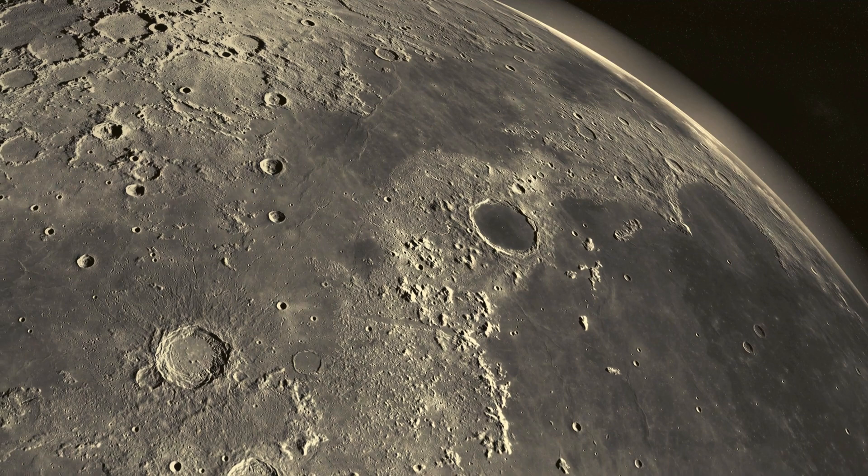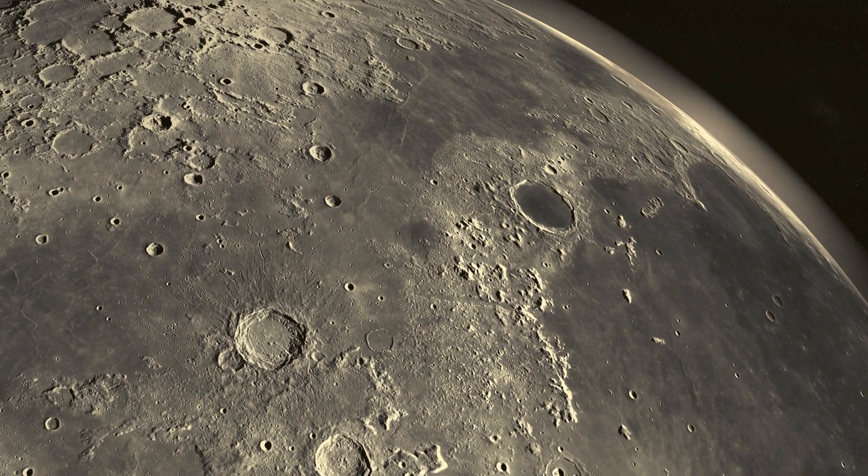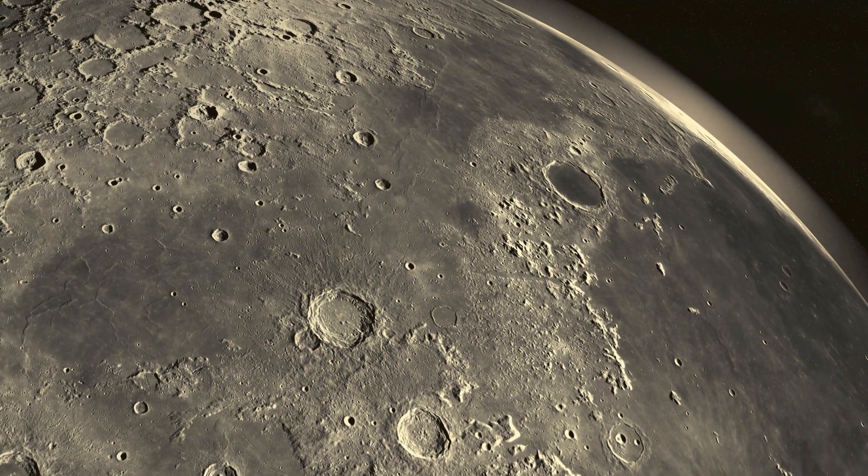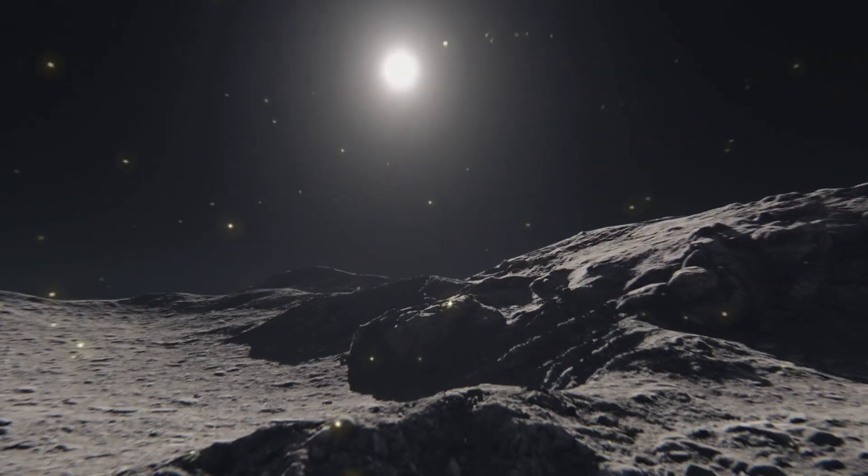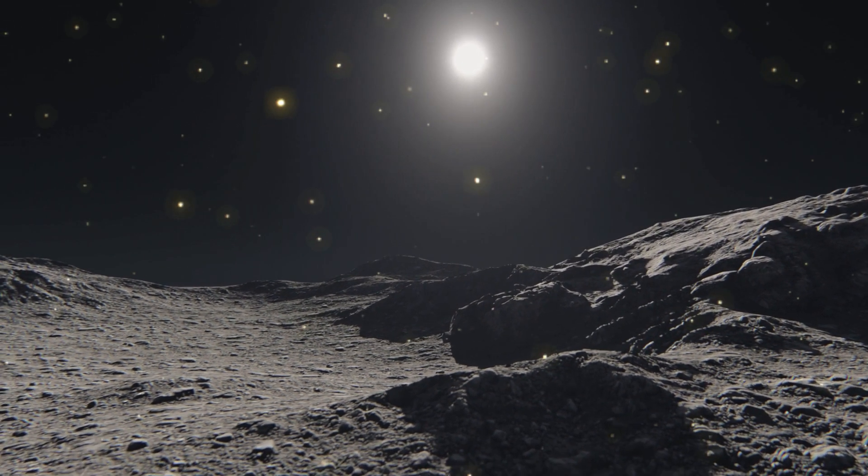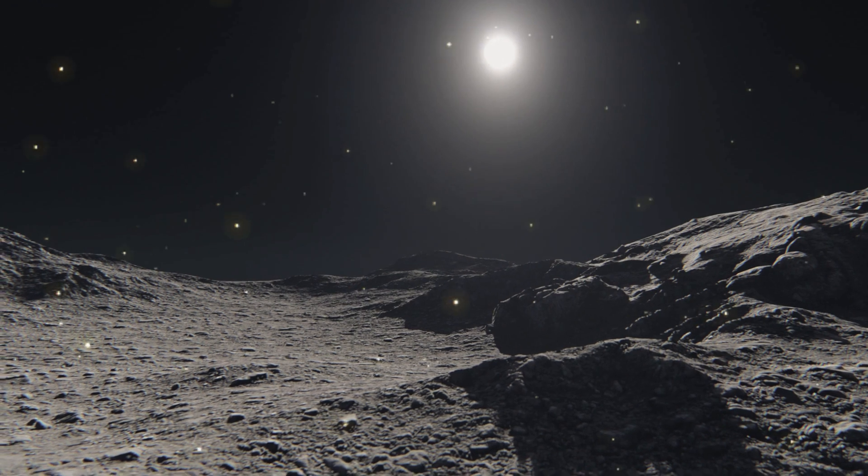These aren't craters. They're hollows - bright, shallow pits where Mercury's surface vaporized. Volatiles, like sulfur, baked by the sun, escaped into space. A phenomenon found nowhere else in the solar system.